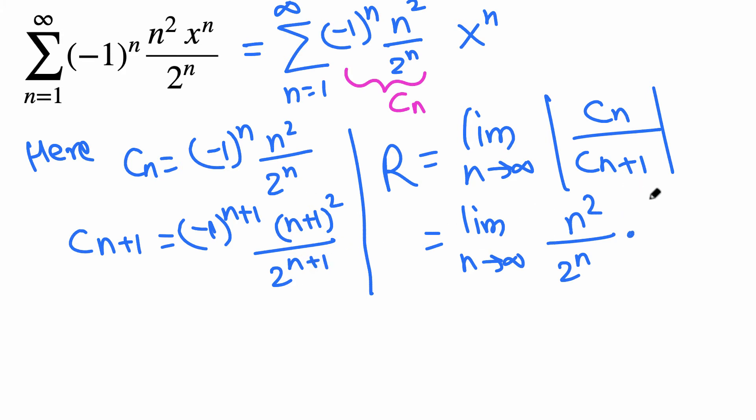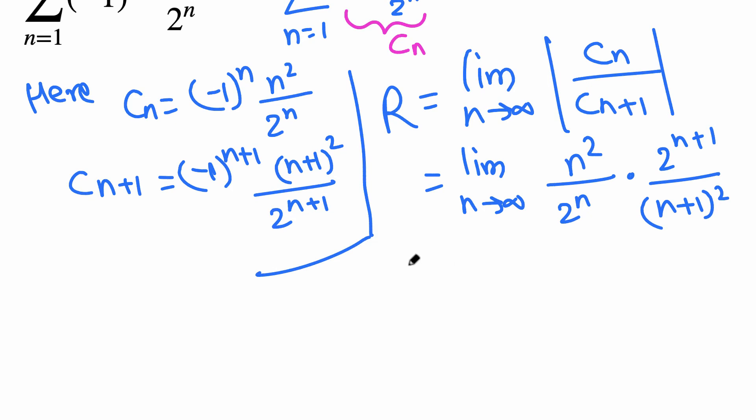So I got 2 to the n plus 1 on the top and n plus 1 squared on the bottom, which is the limit as n goes to infinity of n squared times 2 to the n plus 1. That's the same as 2 to the n times 2 to the 1, or just 2.